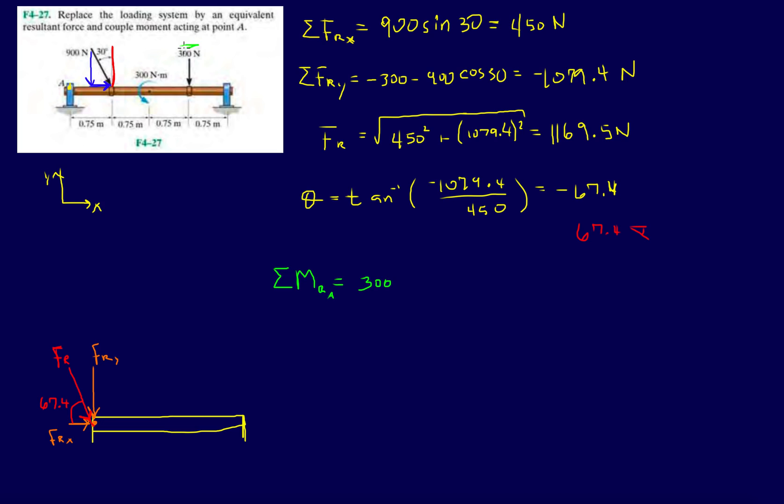So sum of moments. Let's start with this 300 Newton-meter moment, which is positive because it's counterclockwise. This 300 Newton force is going to try to make the structure rotate in a clockwise direction, so it's negative: minus 300 times the distance 2.25.